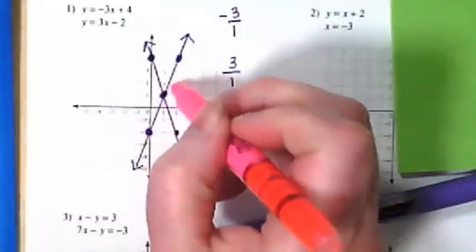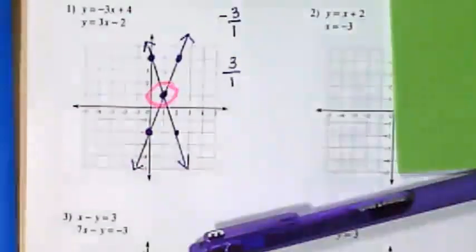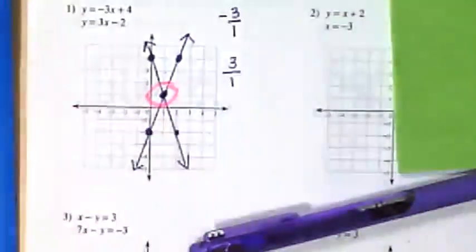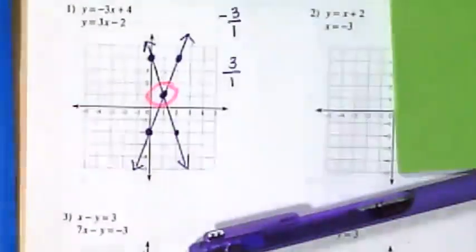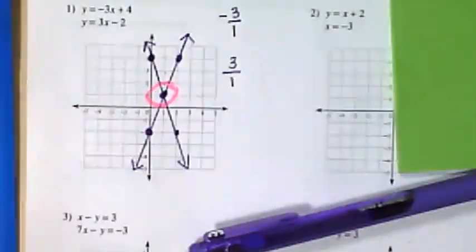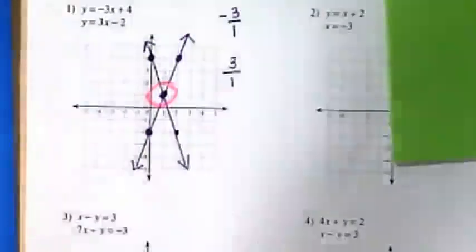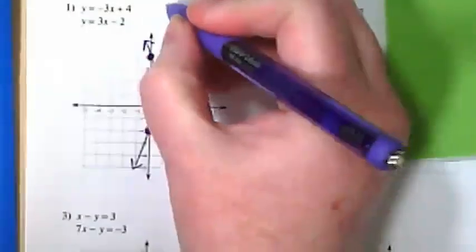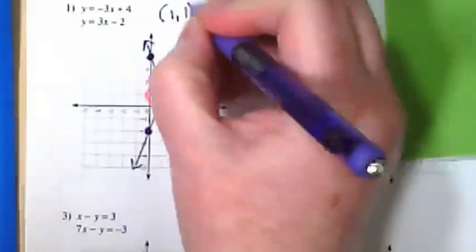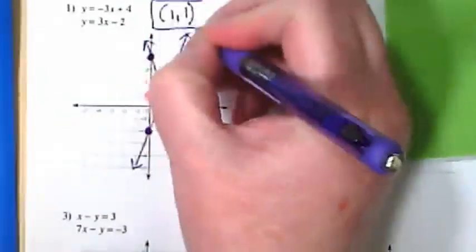We know our solution is where our two lines are meeting, where they're intersecting. And what point is that? It looks to me like it's 1, 1. So that is our solution.